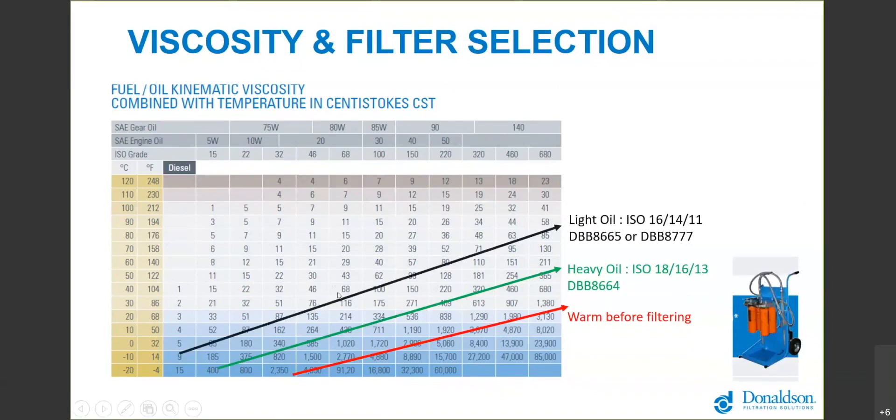Between 100 and 300 centistoke viscosity, we would recommend a light oil filter which would produce an ISO code of 16/14/11 downstream. There's two part numbers, this is our light oil filter and this is our winter fuel filter. Here's an example of our hydraulic cart. It's got a white suction strainer and then it goes in series filtration with particle filtration followed by water absorption.